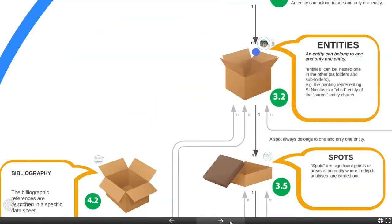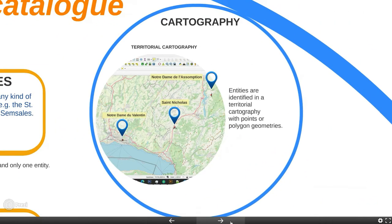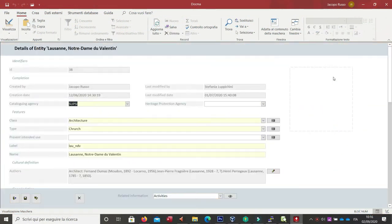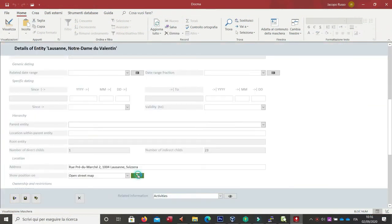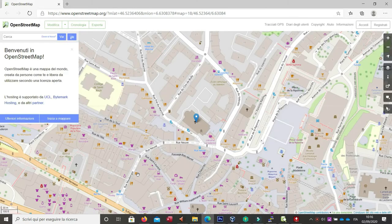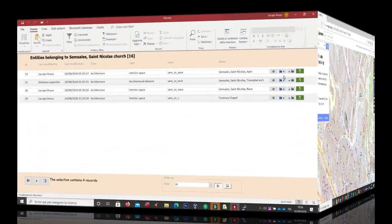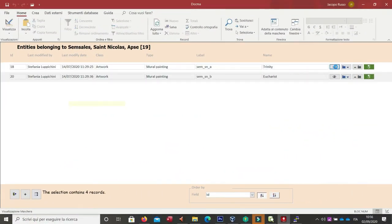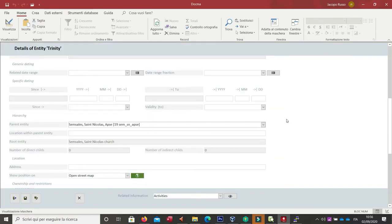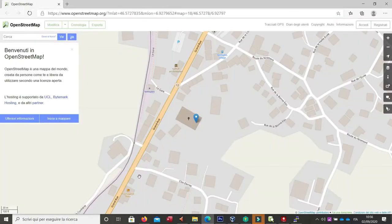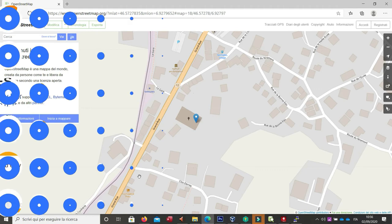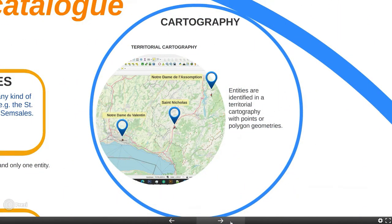Cartography plays a very important role in the system. The system is in fact a geographic information system. There are two levels of cartography. The first consists of a territorial cartography that allows to locate all the entities. This is very useful for the safeguard and protection related applications. The interesting thing is that if an entity doesn't have its own geometry, it inherits the position from the parent entity. This is very useful in the management of movable property.